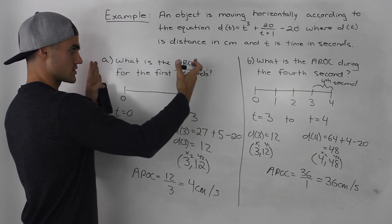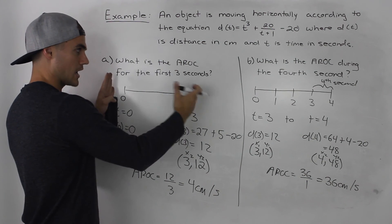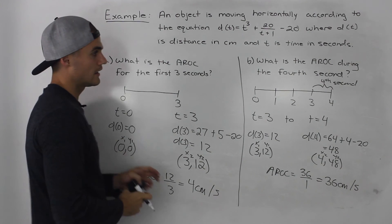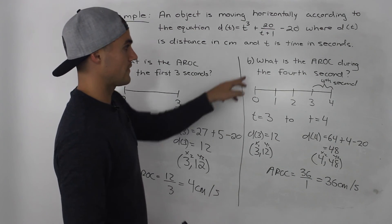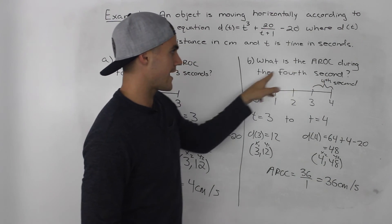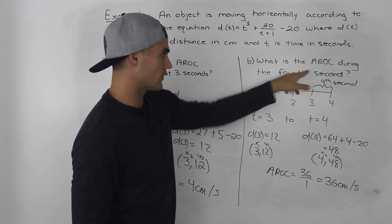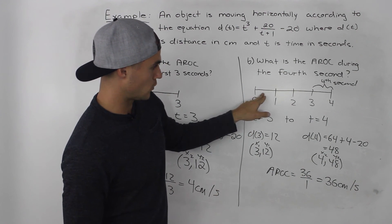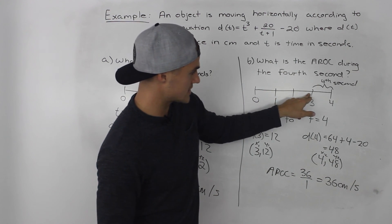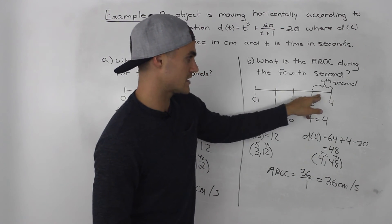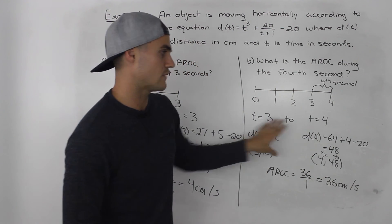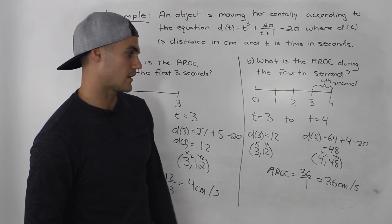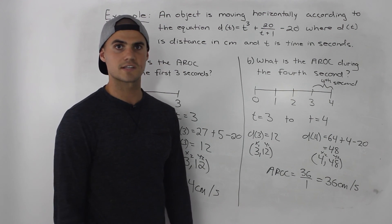Be careful with these types of questions. When they ask for the first amount of time — like the first three seconds — it's always between zero and that amount. When they ask during a certain time, like during the fourth second, draw a timeline: the fourth second happens between 3 and 4, so find the average rate of change between those values — which gives 36 centimeters per second.